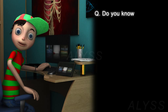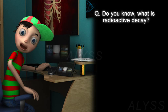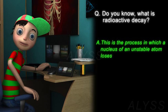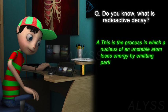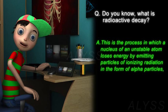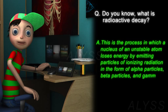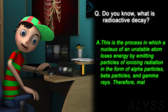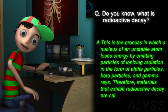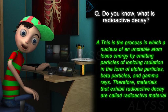Do you know what is radioactive decay? This is the process in which a nucleus of an unstable atom loses its energy by emitting particles of ionizing radiation in the form of alpha particles, beta particles, and gamma rays. Therefore, materials that exhibit radioactive decay are called radioactive material, such as radium.